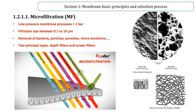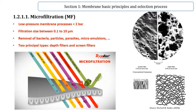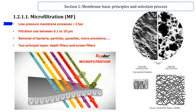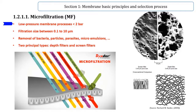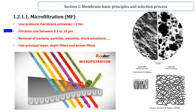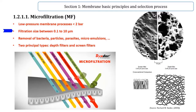Microfiltration is an important and widely used separation process. Among other membrane processes, microfiltration comes under the category of low pressure membrane processes due to the use of an applied pressure below 1 bar. Microfiltration refers to filtration processes that use a porous membrane to separate suspended particles with diameter between 0.1 to 10 micrometers.